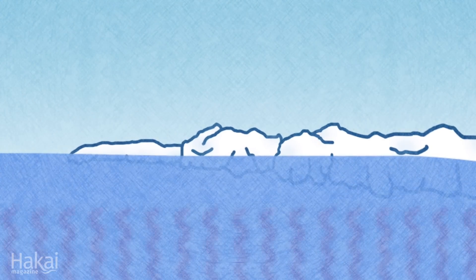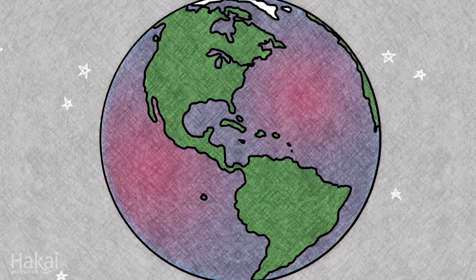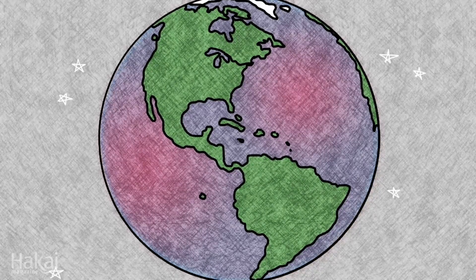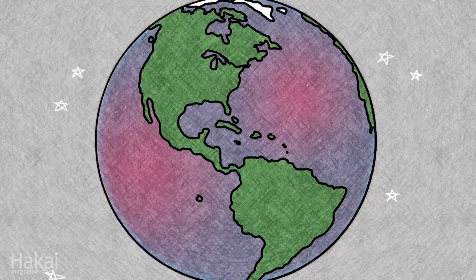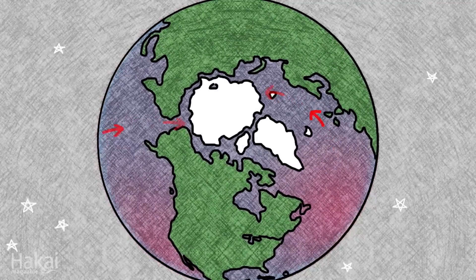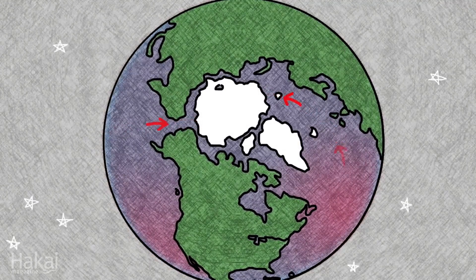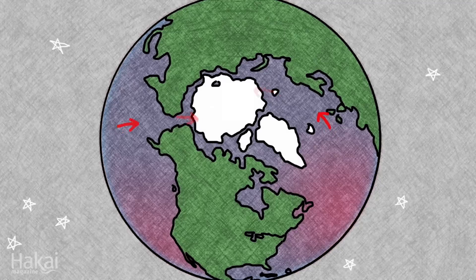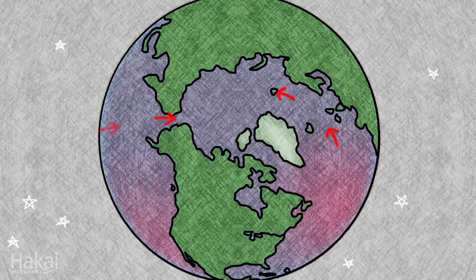But why would the ocean melt the ice? First off, the Atlantic and Pacific oceans are heating up, and warmer currents flow from these oceans into the Arctic. In fact, these currents carry enough heat to instantly melt the overlying ice cover.